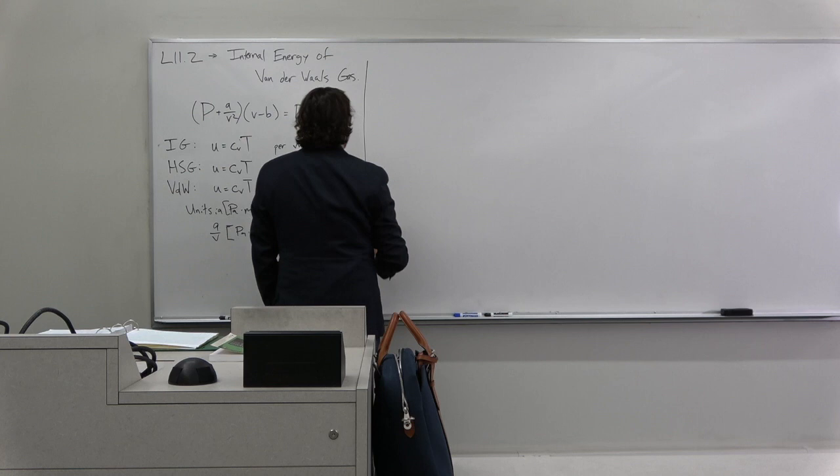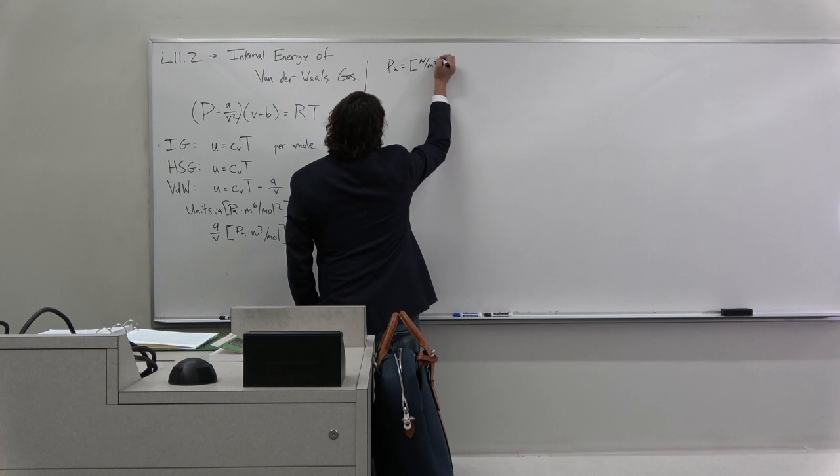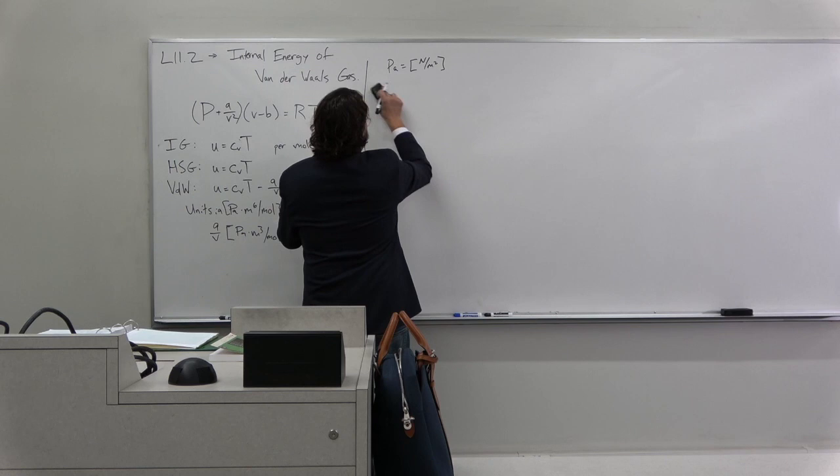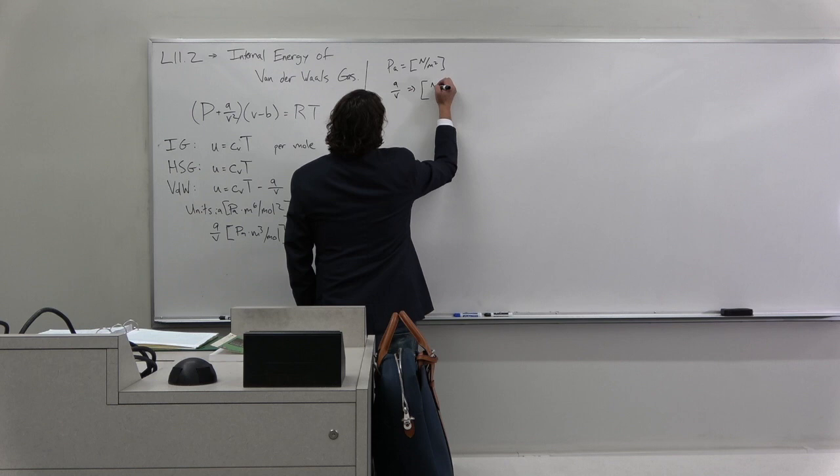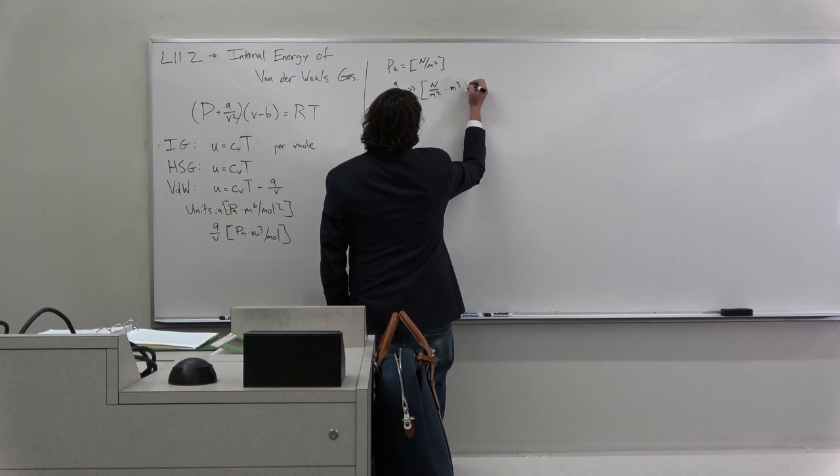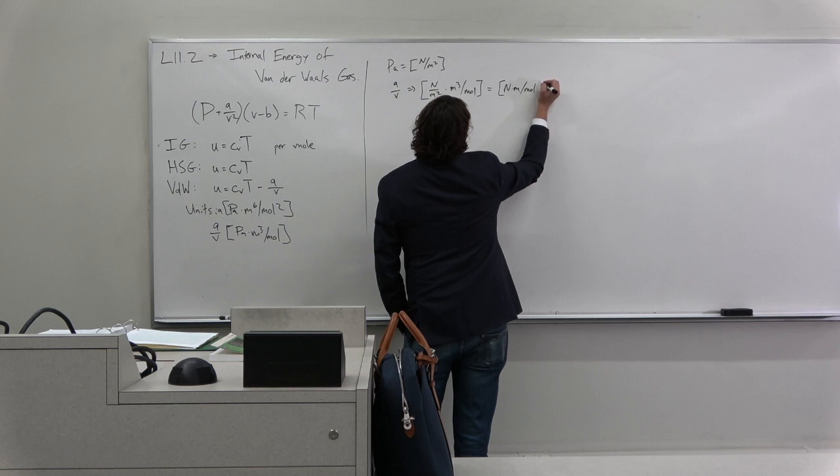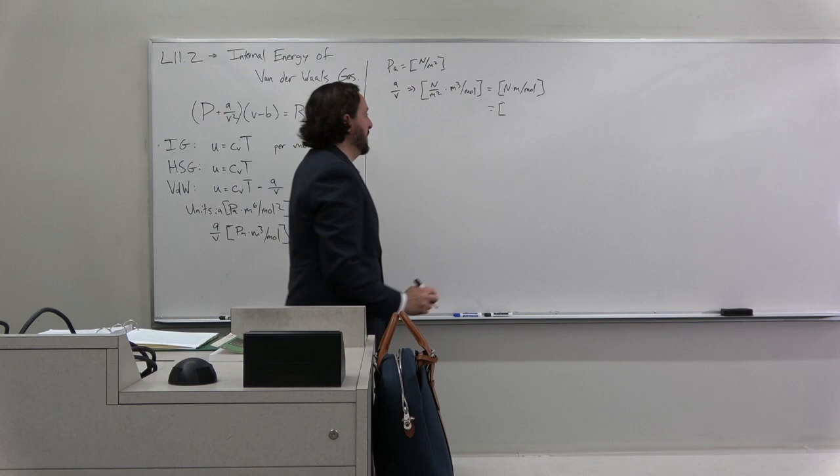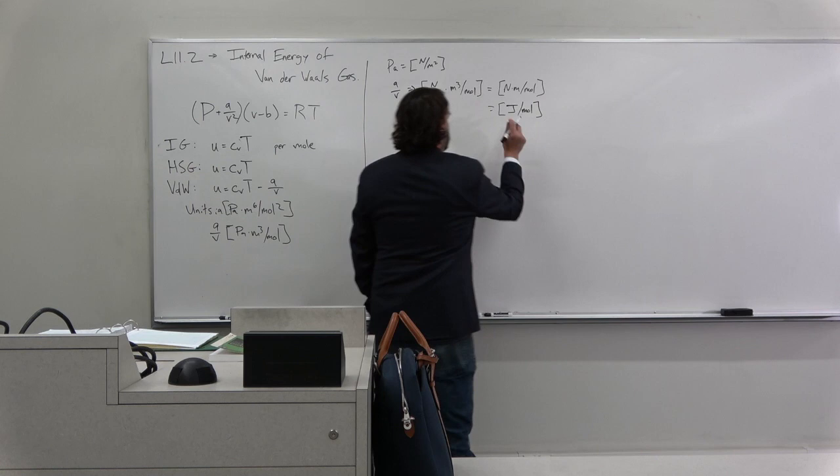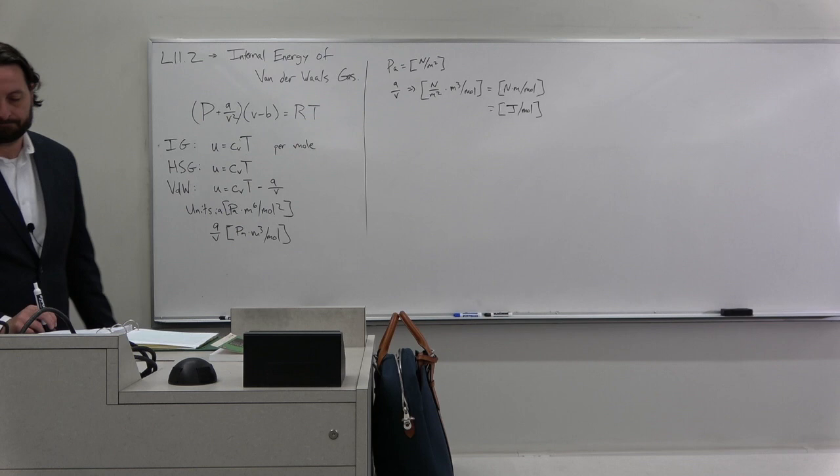Remember a pascal was a newton per meter squared. So A over V has units newton per meter squared times meter cubed per mole, which is newton times meter per mole. And you can see that newton meter is a force times a distance, that was a joule. So dimensional analysis, this makes sense, it must be A over V.